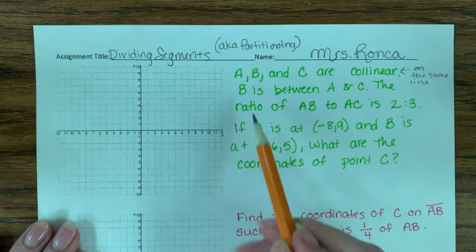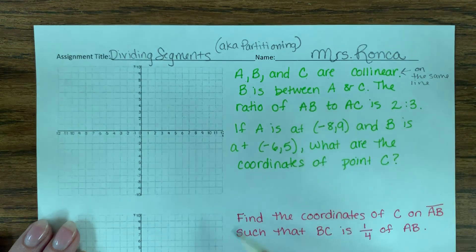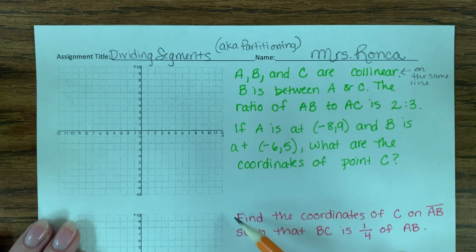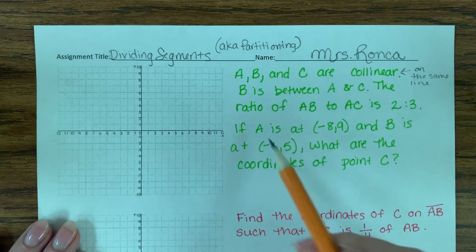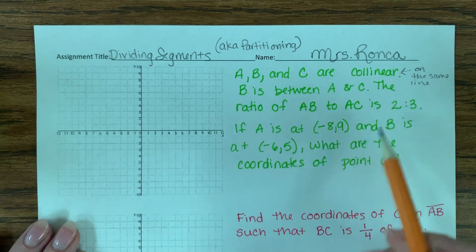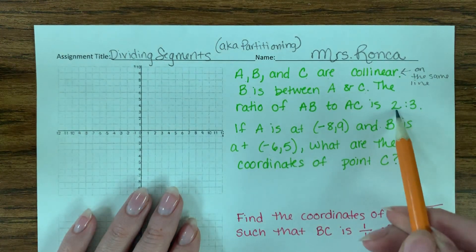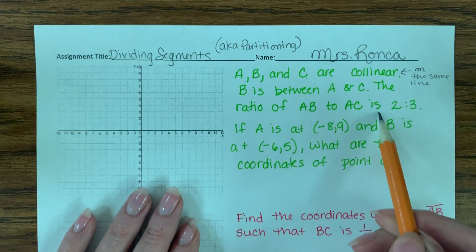And they tell me that B is in between A and C. They go on to give me a ratio, and then they tell me that A is at this coordinate and B is at another coordinate. So it's really important whenever you're dealing with ratios that match up to segments that